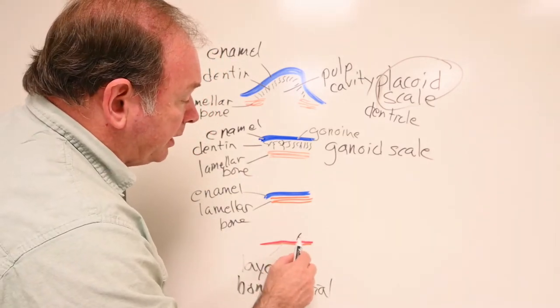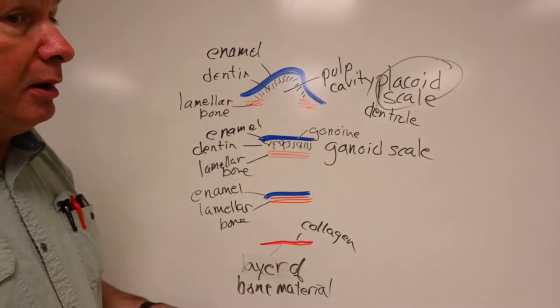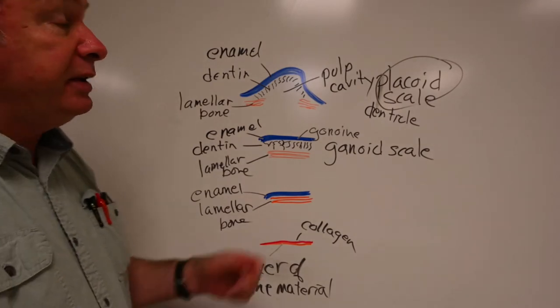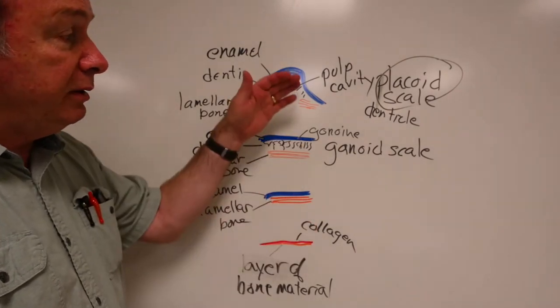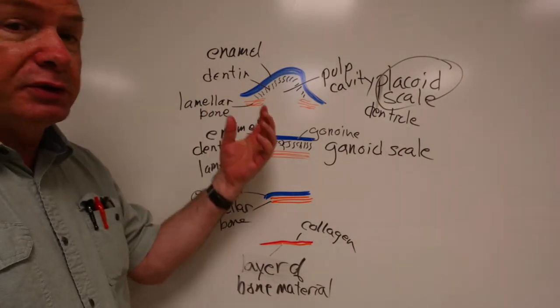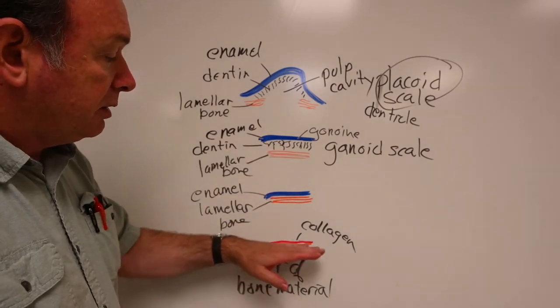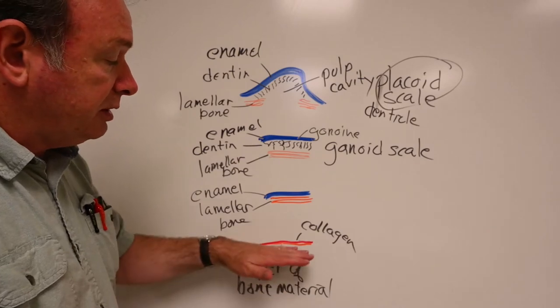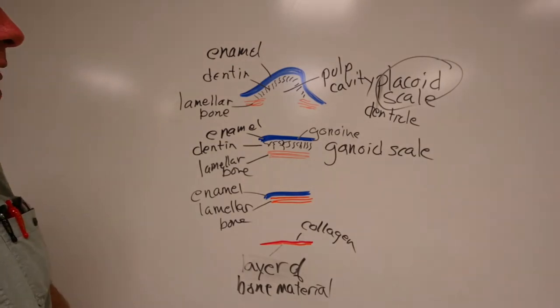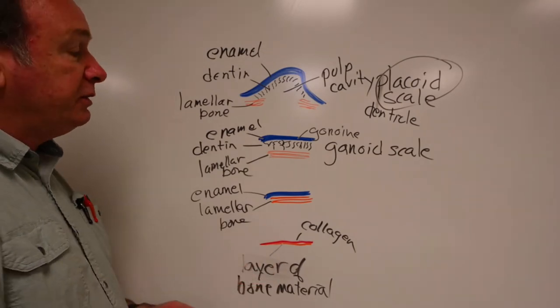And then on top of that, we have a layer of collagen that makes up the scale. Most of our fish, like a carp or a bass or whatever, would have a scale of this type. So we can see there's a reduction in the material as you run from the more primitive types to the more advanced types of fish. First you lose the spongy bone. Then you start to lose the dentin layer. Then your lamellar bone is essentially gone.